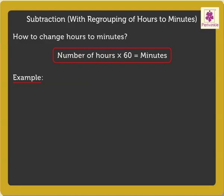For example, 1 hour 15 minutes is equal to 1 times 60 in the brackets plus 15, which equals 60 plus 15, which equals 75 minutes.